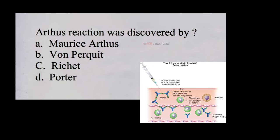Arthus reaction was discovered by A. Maurice Arthus. Arthus reaction is a kind of immune response that happens when your body reacts to repeated exposure to a particular substance, like a vaccine. Imagine it as your body's way of saying, hey, I have seen this before, and launching a quick response. It's part of how your immune system learns to protect you from harmful stuff.